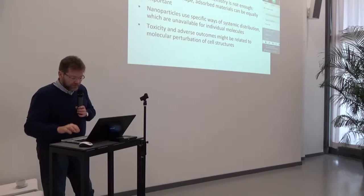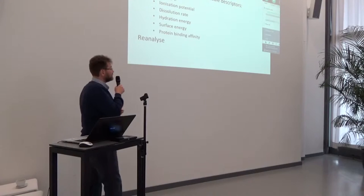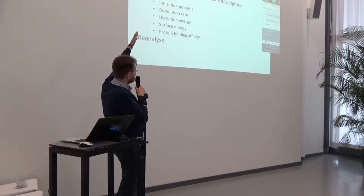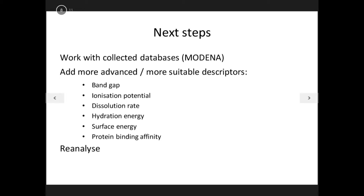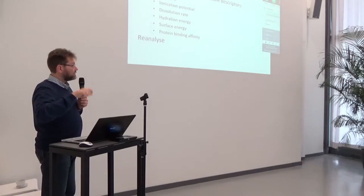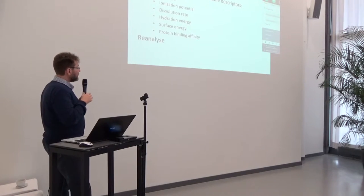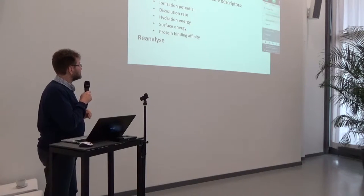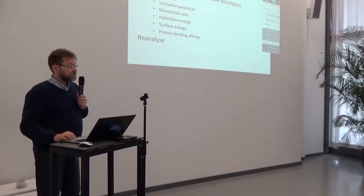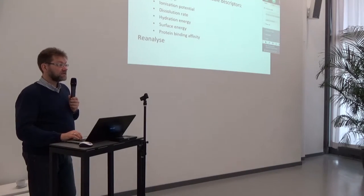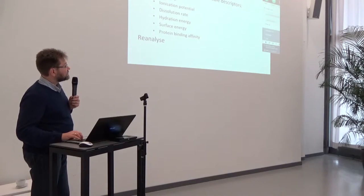So we have to calculate the relevant descriptors — the next steps we propose in modeling and new characterization of nanomaterials. Not just chemistry, but calculate the electronic structures: band gap, ionization potential, dissolution rate, hydration energy, surface energy, protein or lipid binding affinity, and so on. These are complex and advanced descriptors, but they can be calculated. We need to build models for careful and quantitative modeling of the bio-nano interface, where inorganic and organic materials come into contact. Then, using those new descriptors, we need to reanalyze the existing data, and I believe we will be able to extract new information from that.